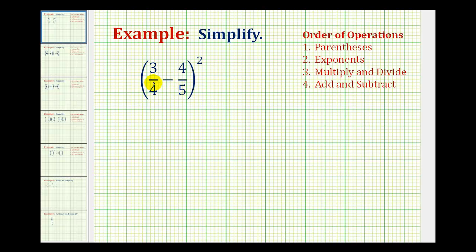But we know in order to subtract fractions, we must have a common denominator. So with a denominator of four and five, the least common denominator will be 20, which is the smallest number that is divisible by both four and five. It's also the least common multiple of four and five.